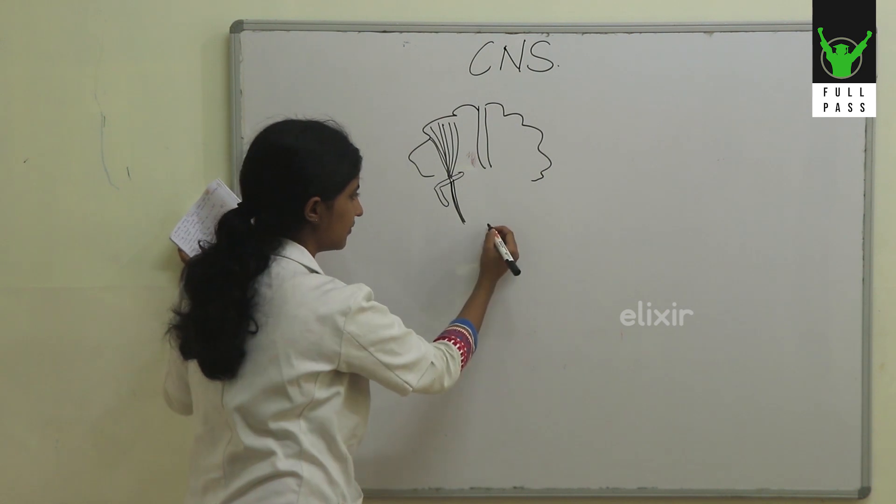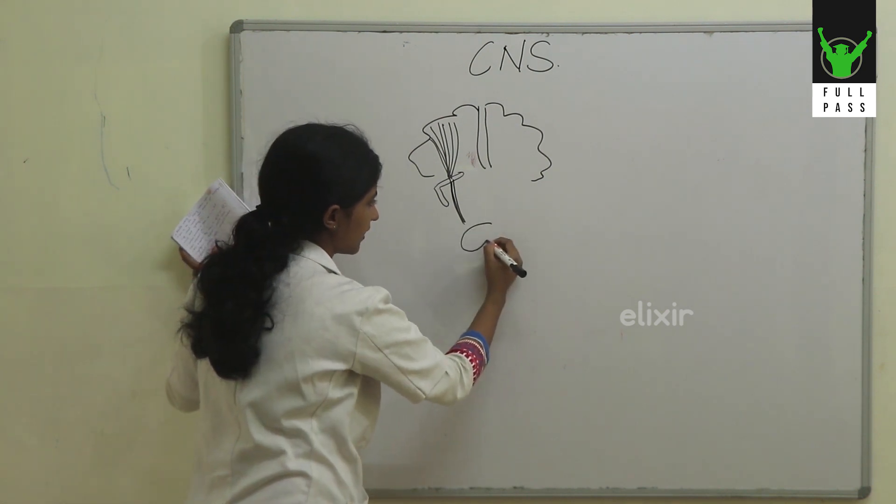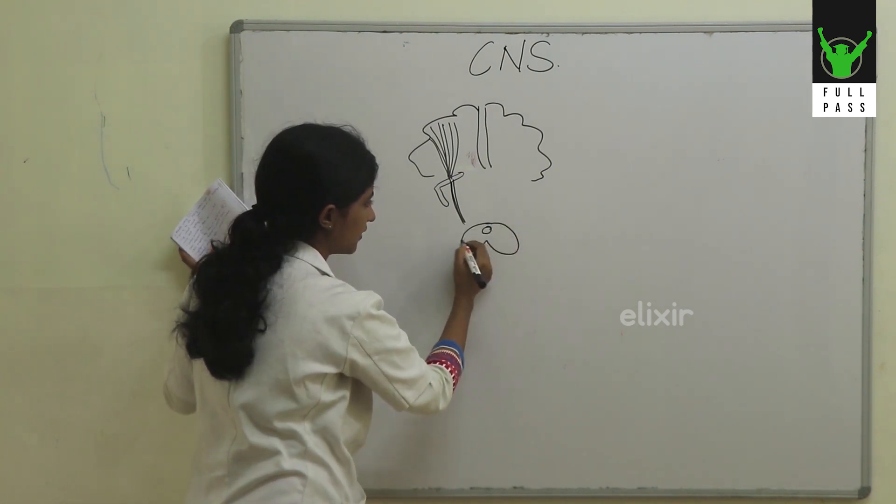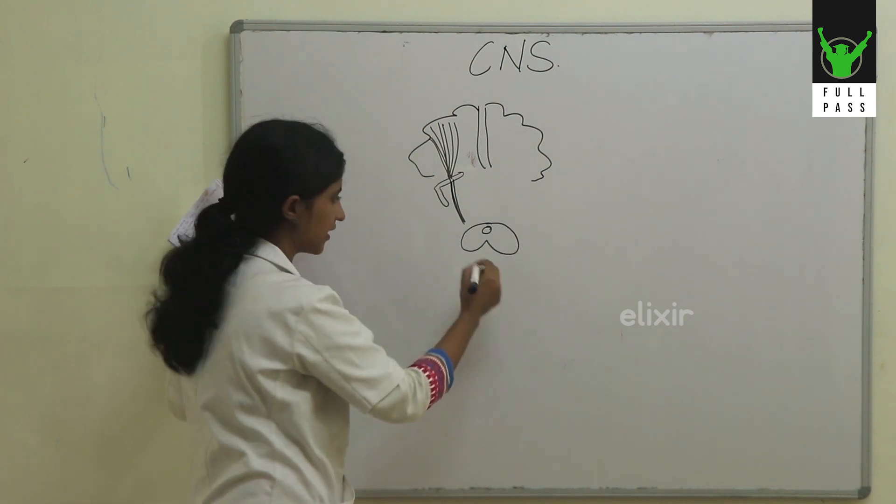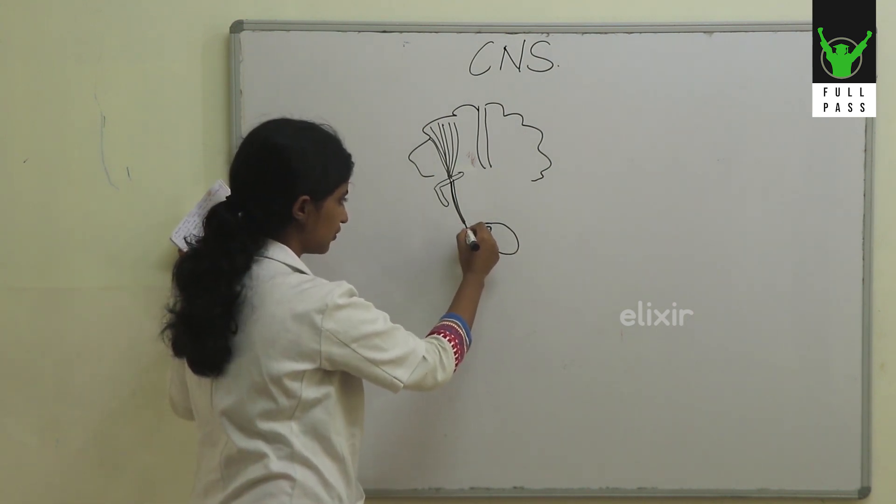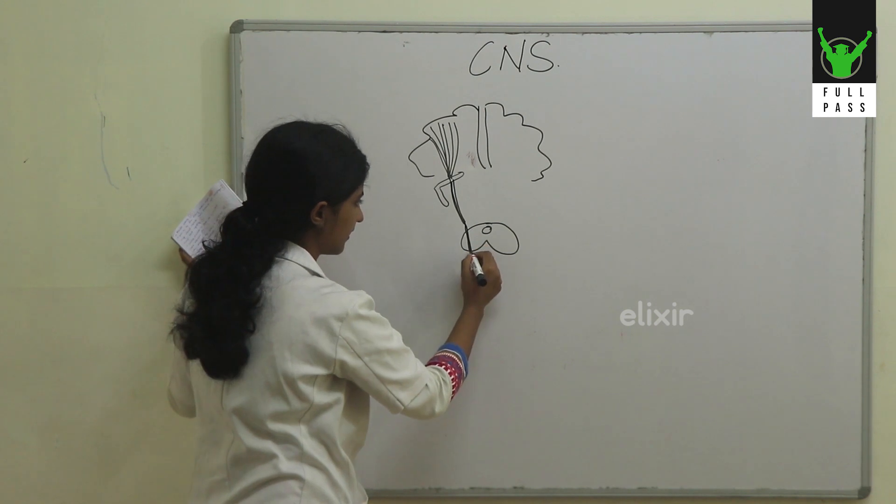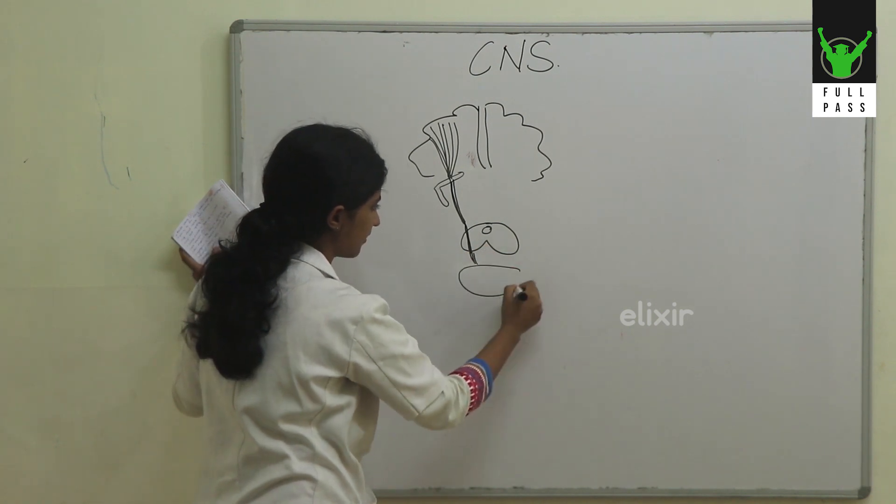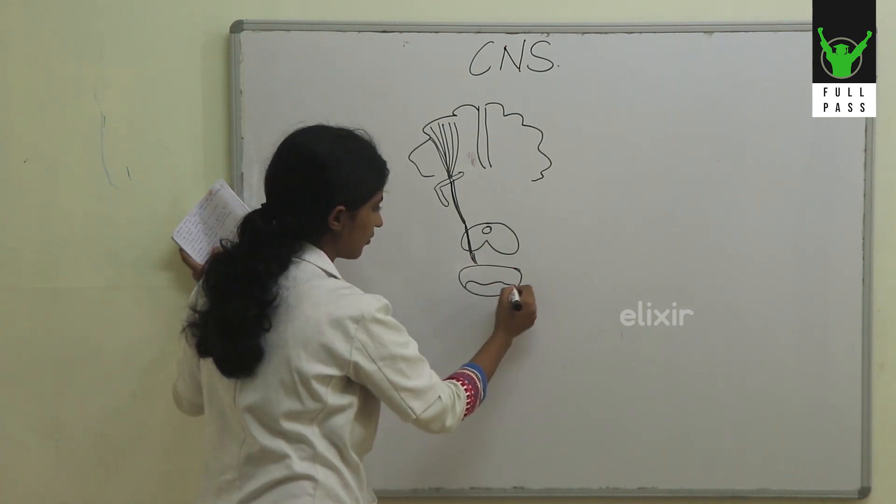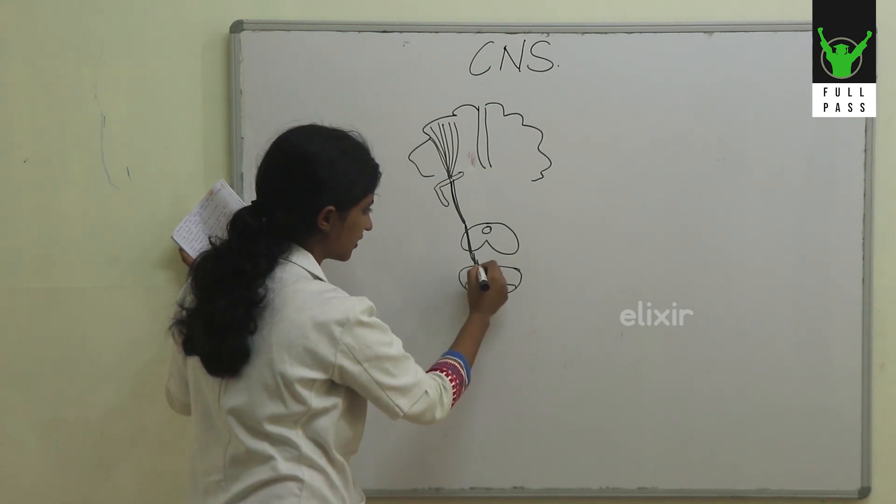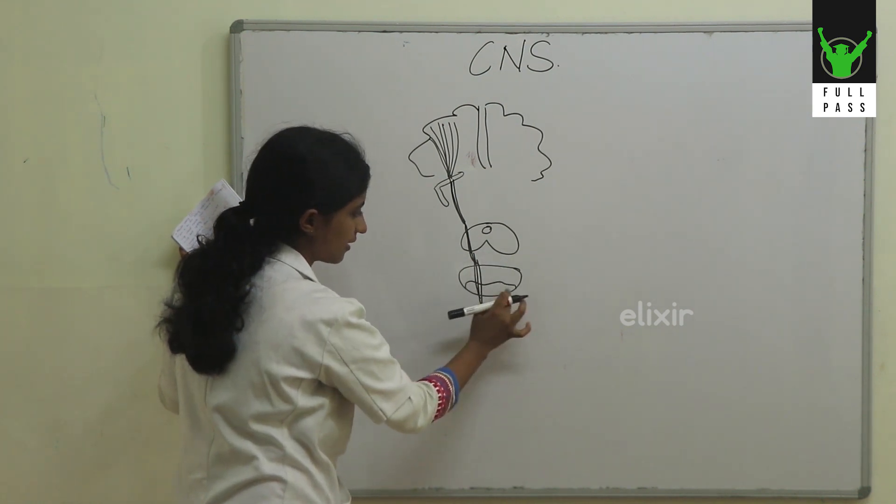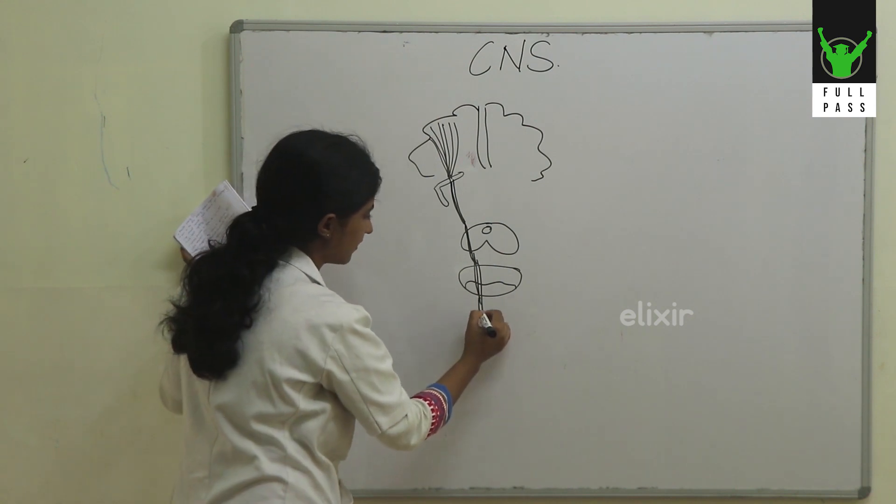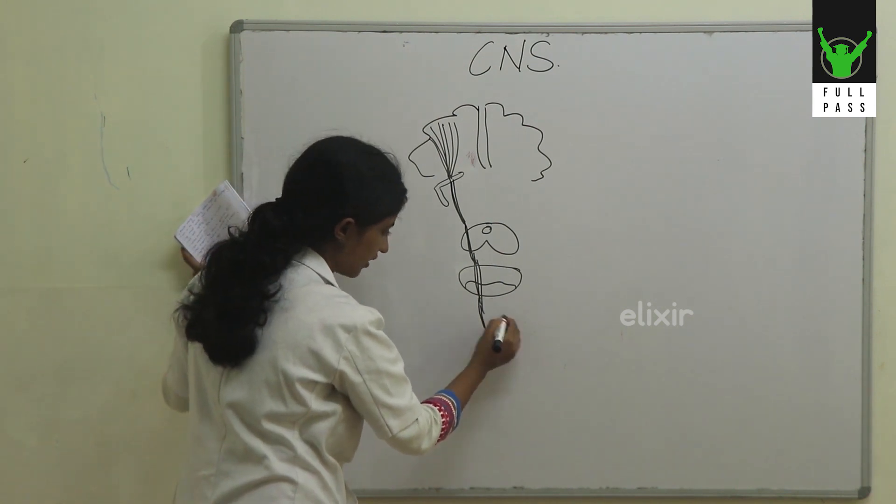In the brainstem, we have the midbrain, and in the midbrain anteriorly we have the crus cerebri where they pass through. In the pons, they reach the basal part of the pons where these fibers pass through, and then they descend and reach the medulla.